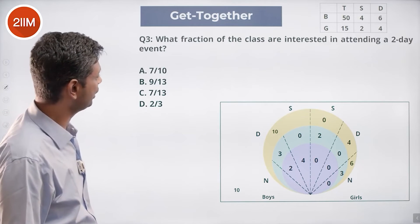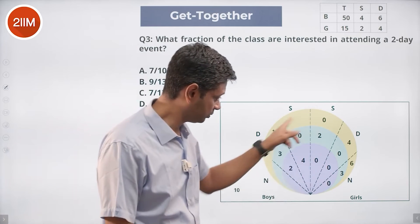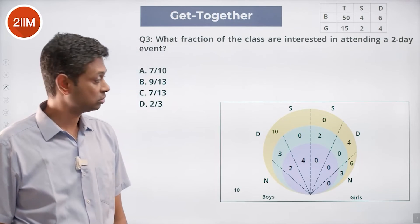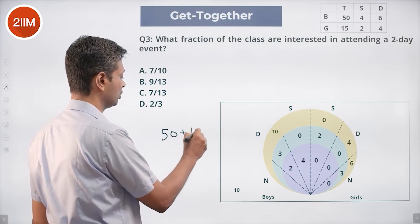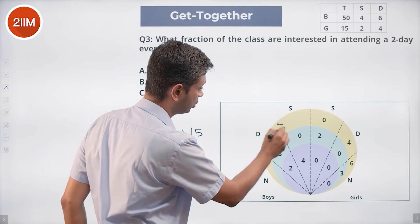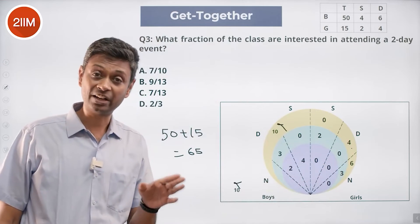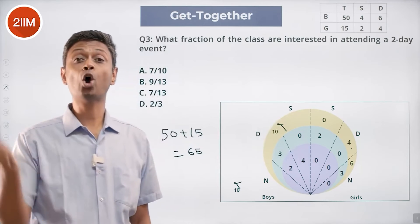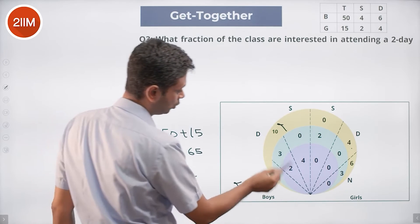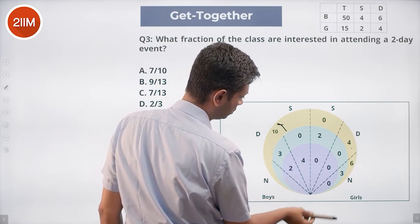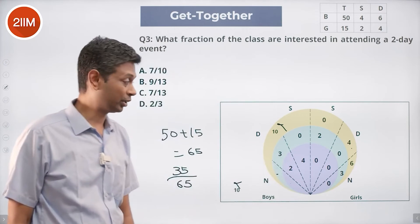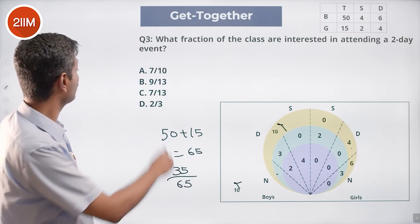What fraction of the class is interested in attending a two-day event? Total class = 50 boys + 15 girls = 65 people. Those not interested: 10 boys outside one-day, plus some from one-day-only... Working it through: 30 are out (0.2X = 10 not interested, plus one-day-only groups). 35 are interested in two-day event (which includes those interested in three-day also). So 35/65 = 7/13.